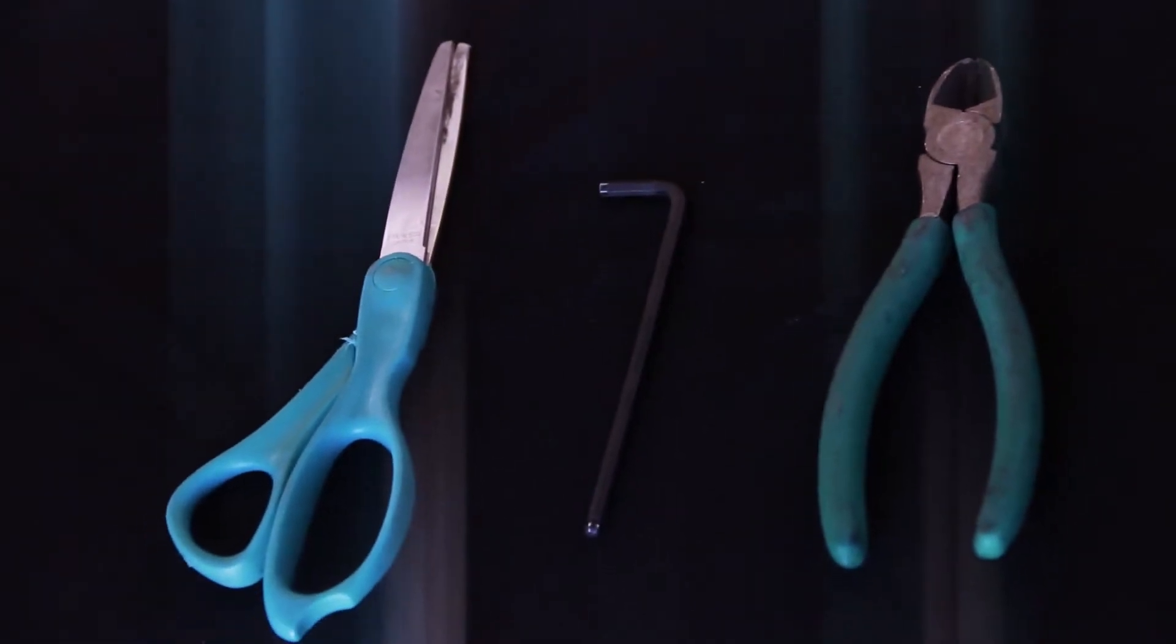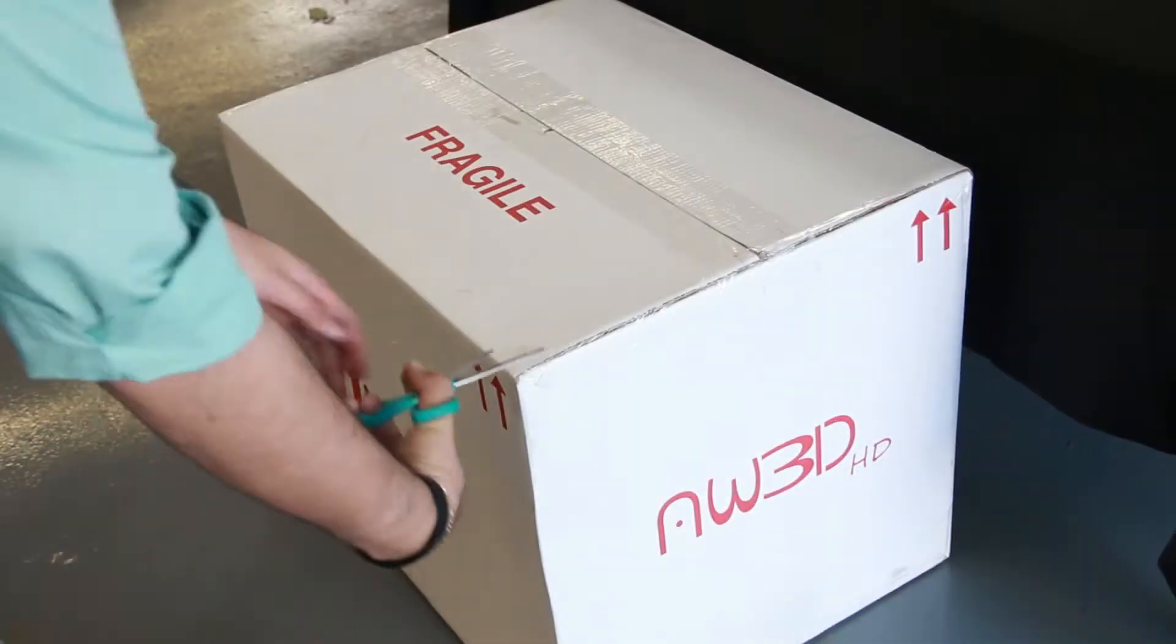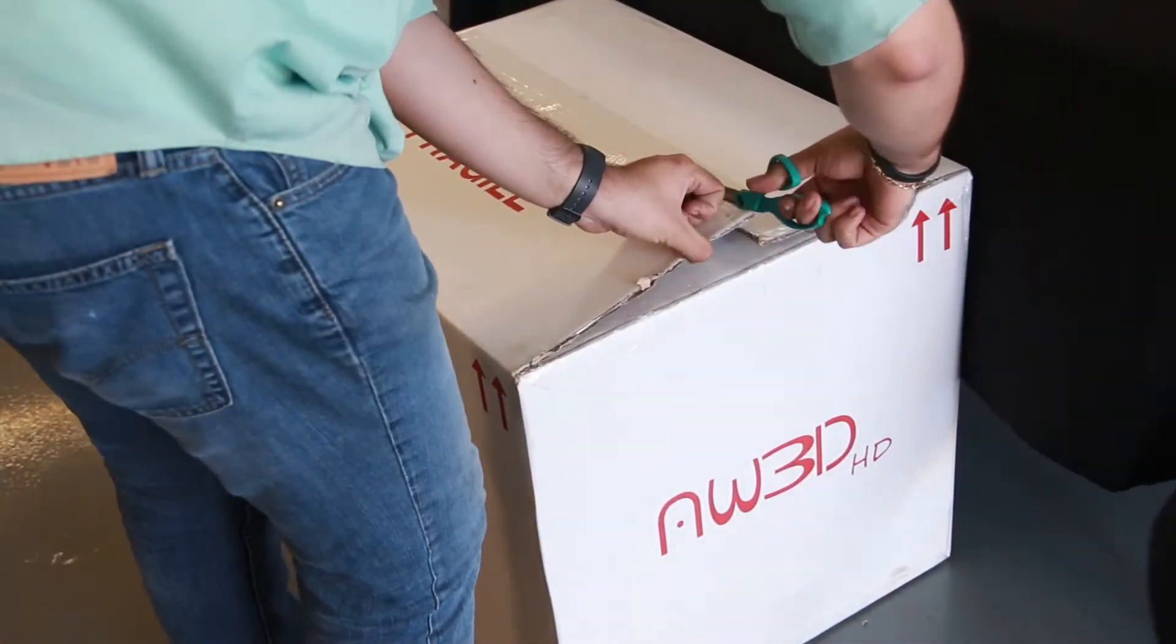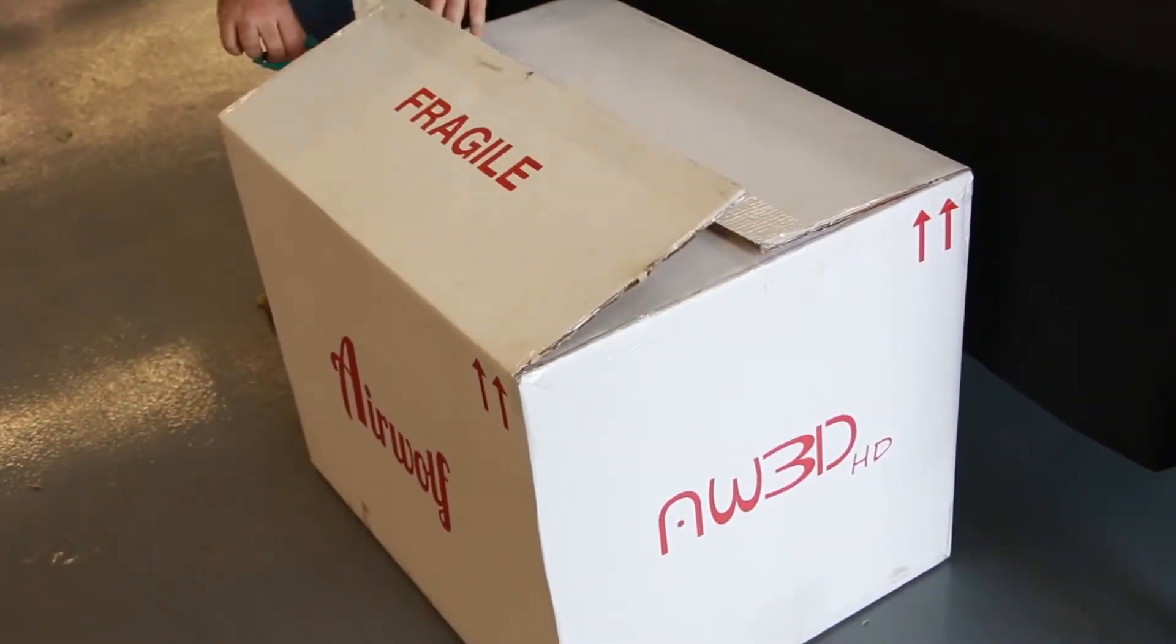You will need a pair of scissors, a razor blade, and some cutters. First, remove the tape by cutting with a scissor or razor blade, then open the box.